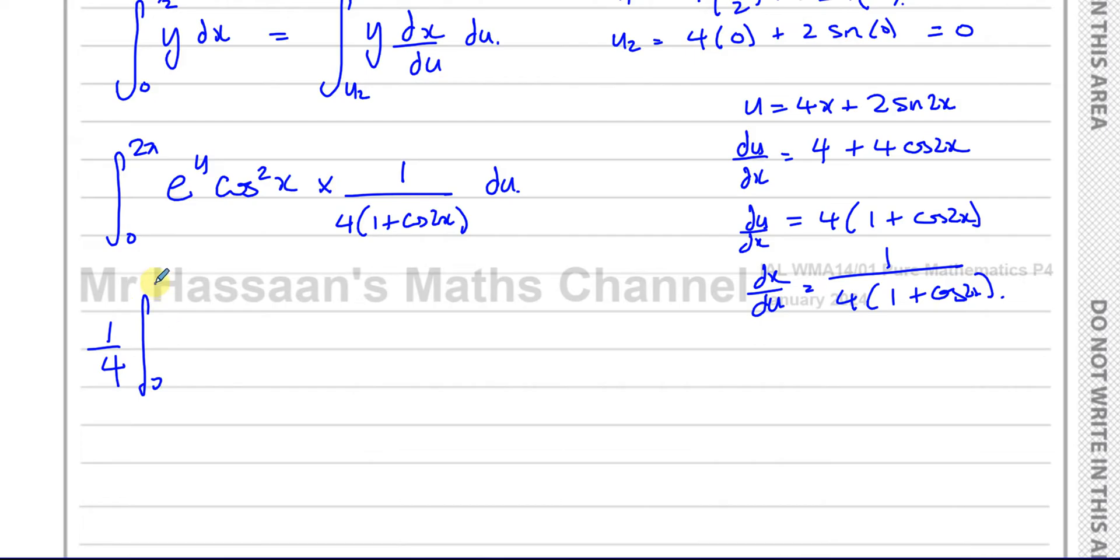I'll have integrals between 0 and 2 pi, e to the power of u. The cosine squared x, let's think of a way to deal with that. I know that cosine of 2x is equal to 2 cosine squared x minus 1. If I can replace the cosine squared x with 1 plus cosine of 2x divided by 2 by using the double angle formula then that might help. So I'm going to replace the cosine squared x here with 1 plus cosine 2x divided by 2.